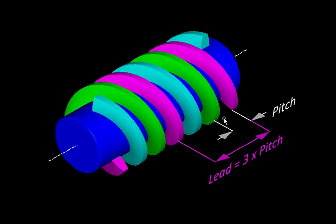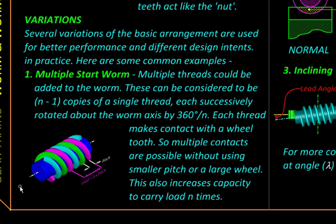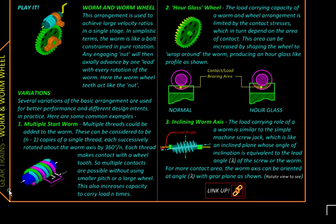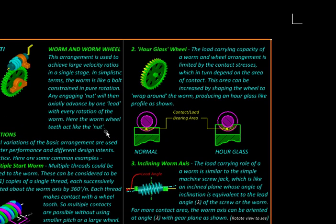The pitch in this case is defined as the distance between two successive threads, while the lead is defined as the distance actually moved in one rotation. Because there are three threads here, the lead will be three times the pitch. The advantage here is you can have multiple contacts between the worm and worm wheel, and increasing number of contacts would increase contact area and that would allow us to carry greater loads.